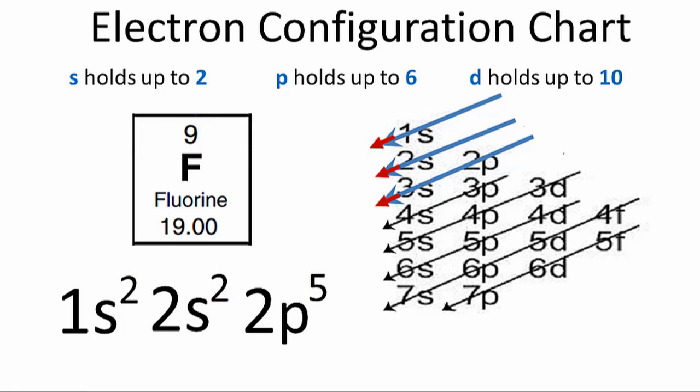So the notation is 1s2, 2s2, 2p5. This is Dr. B with the electron configuration for fluorine. Thanks for watching.